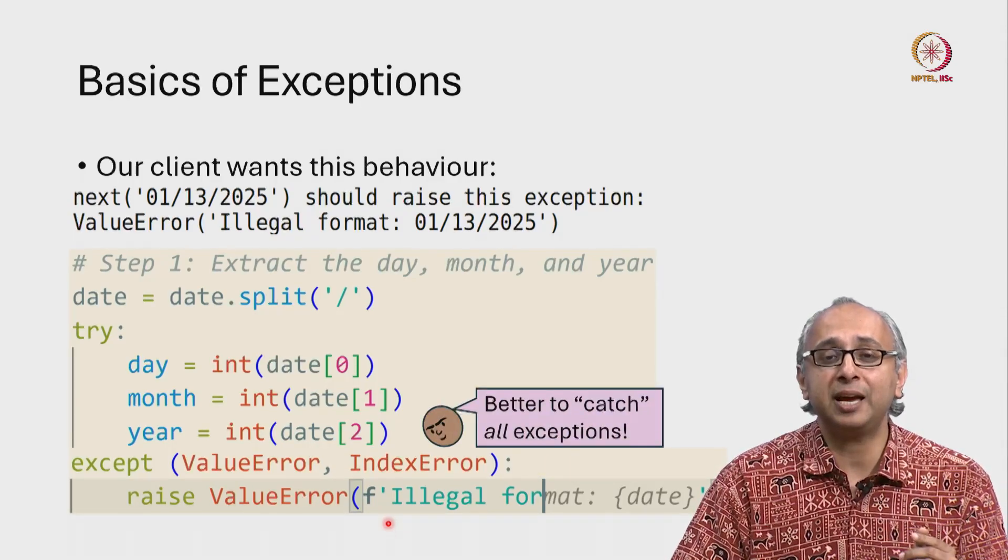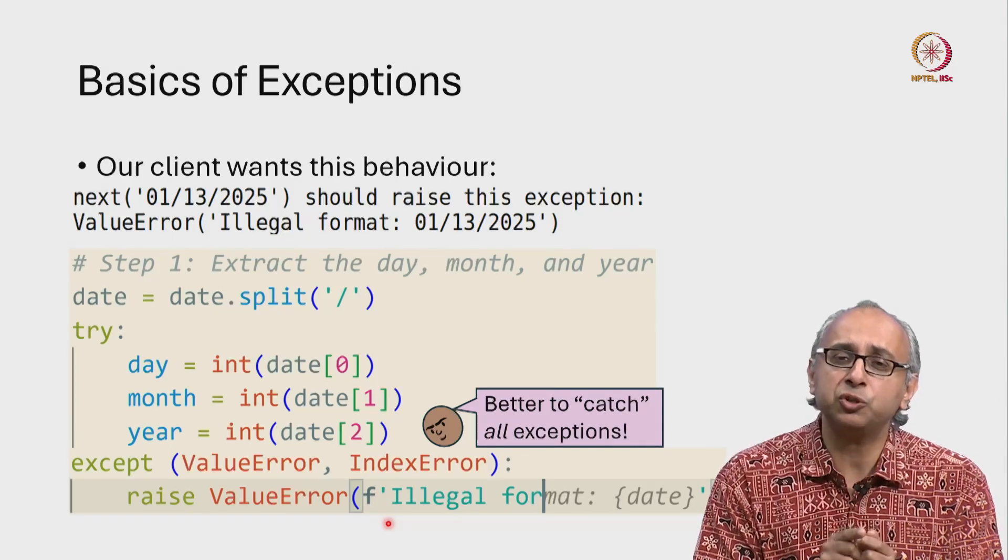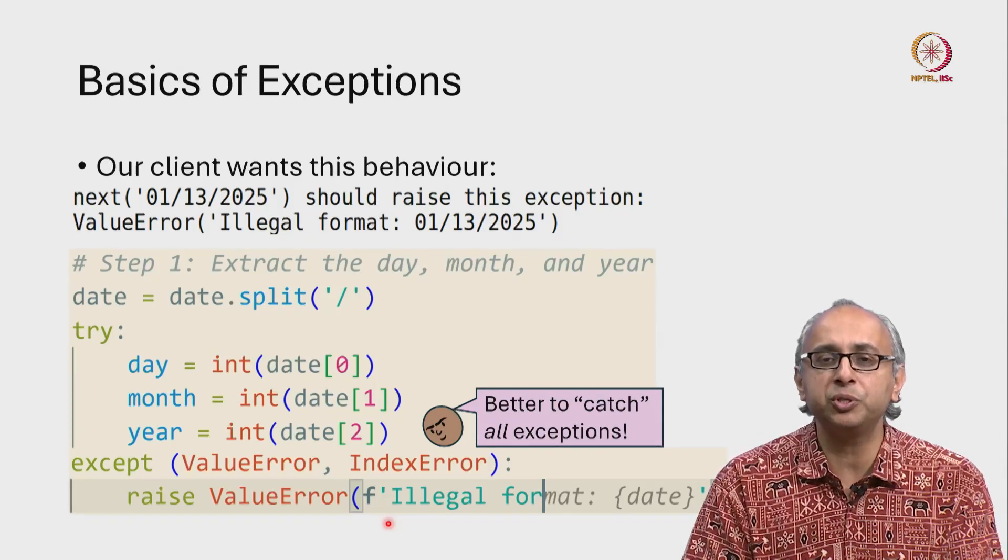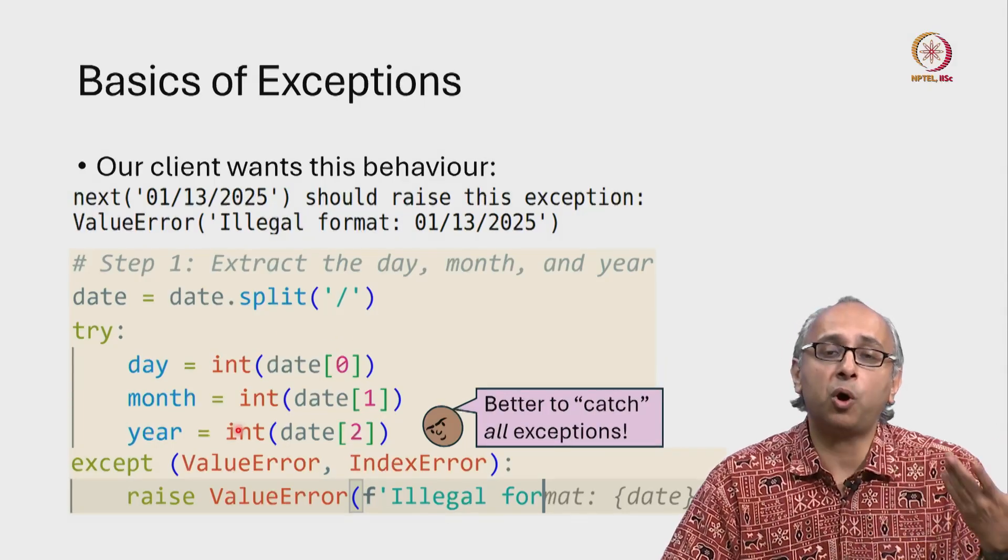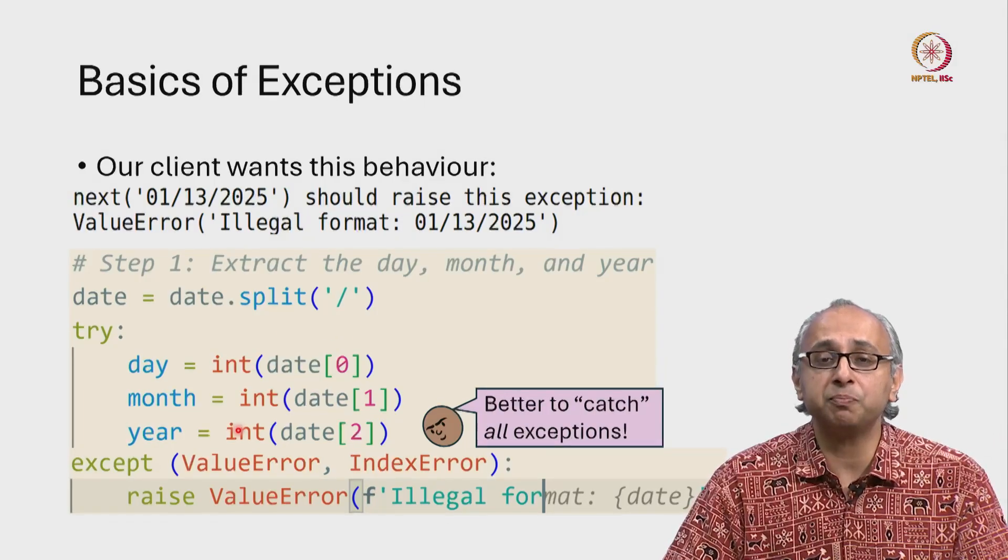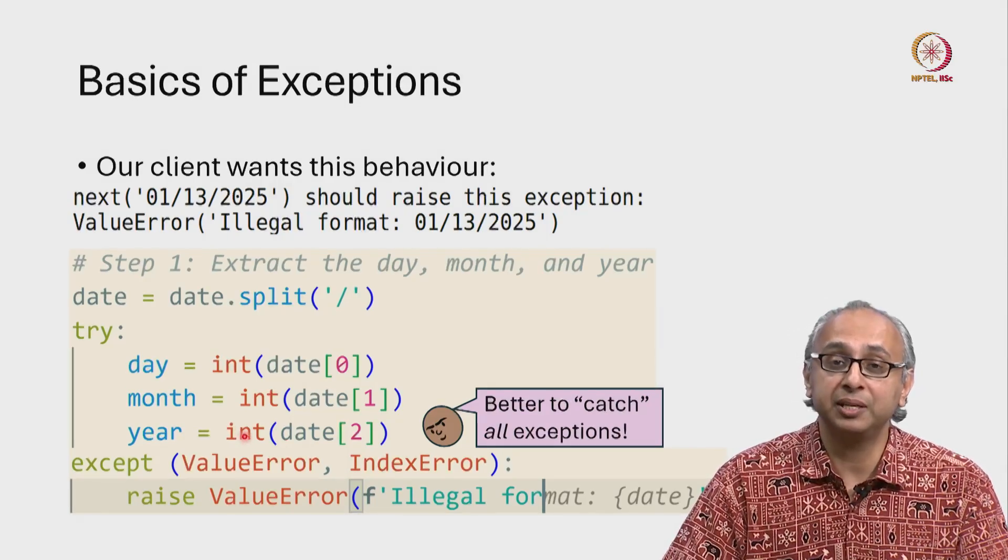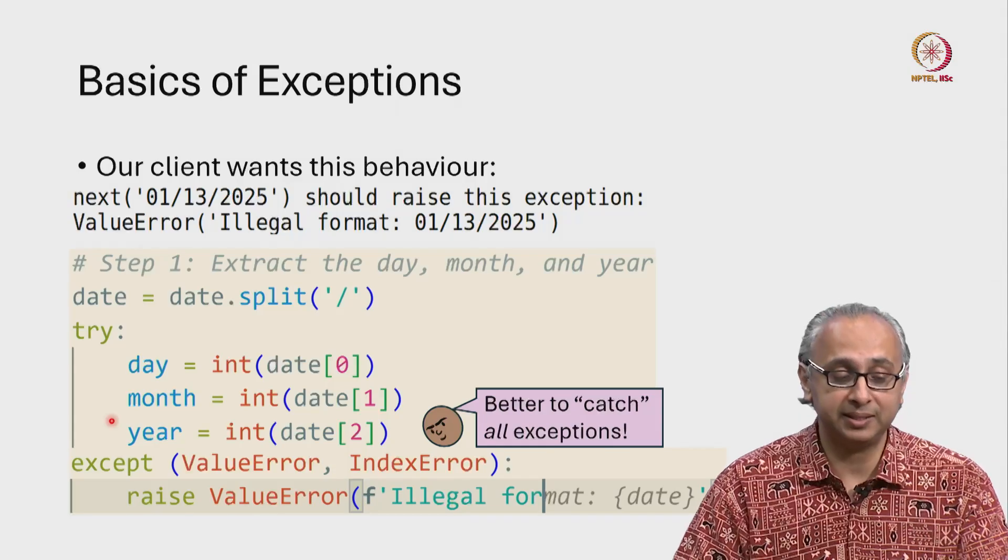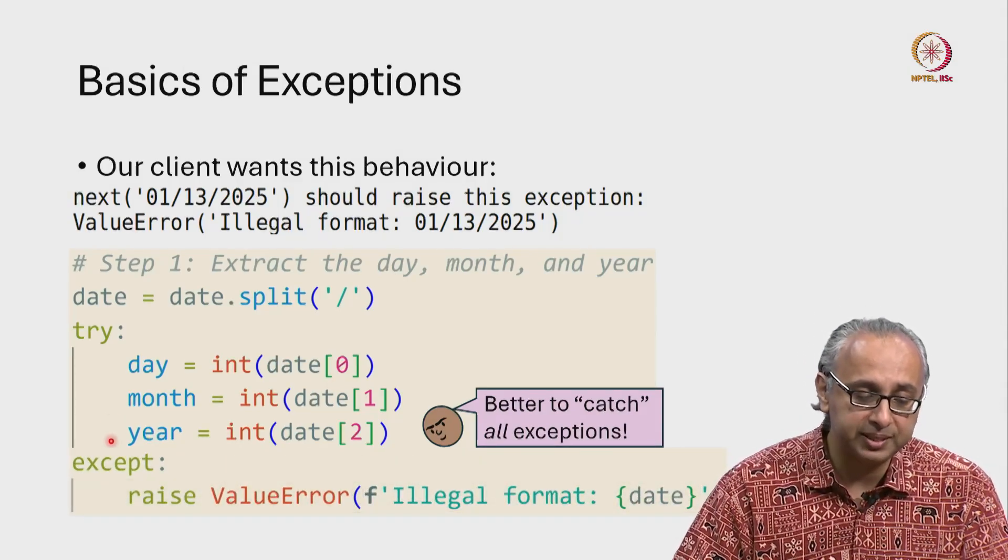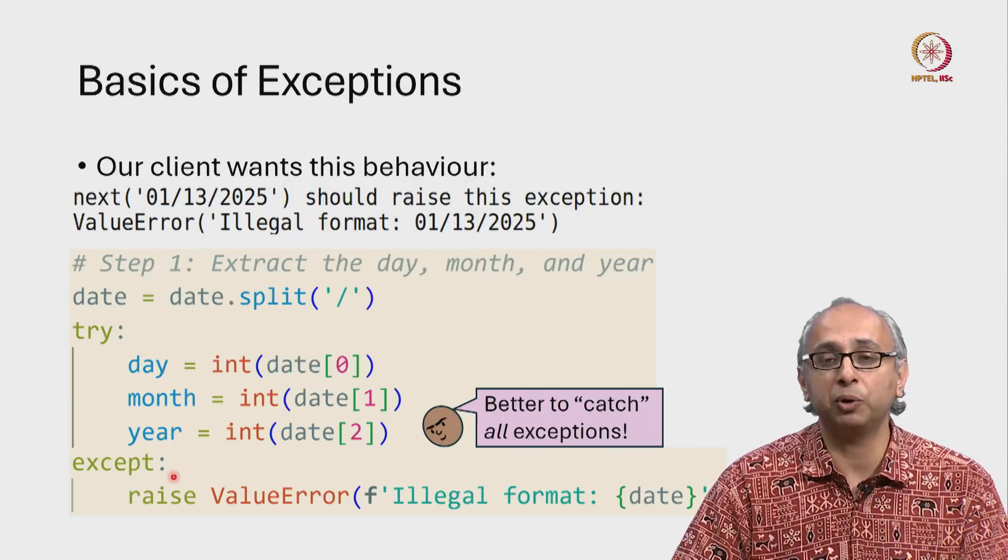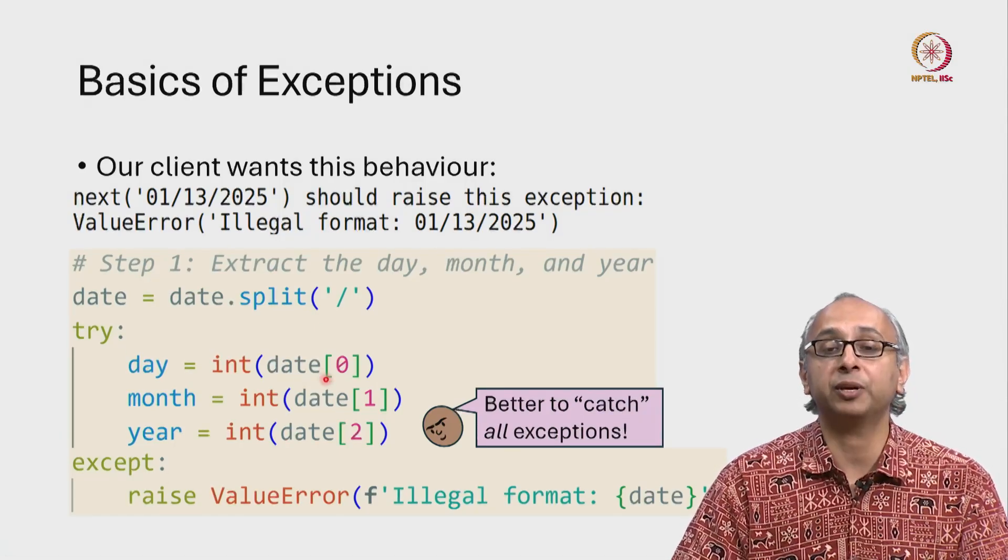Our friend looks at this and has a suggestion. Our friend says, it's better to catch not just these two exceptions, but all exceptions that might happen over here. Who knows what other kinds of errors might be caused by the input that was given? And so our friend wants to, in some sense, play it safe. The way you can say that is get rid of this tuple entirely and just say except colon and then this will catch any kind of exception that happens over here.